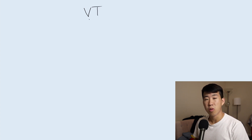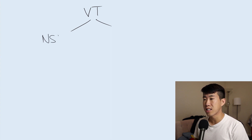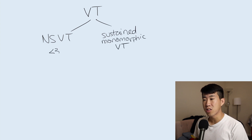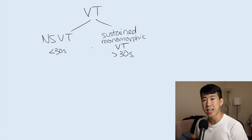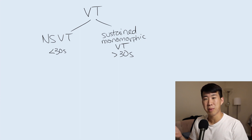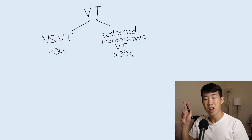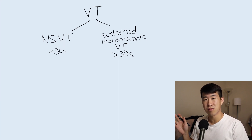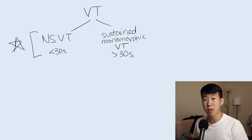If you identify a patient is having ventricular tachycardia, the first step is to define whether this is non-sustained or sustained ventricular tachycardia. If it's less than 30 seconds, it's non-sustained VTAC. If it's greater than 30 seconds, it's sustained. This distinction is important because you'll frequently get paged for patients having 5 or 10 beat runs of VTAC, which is non-sustained and treated much differently than sustained monomorphic VTAC.